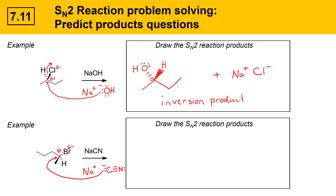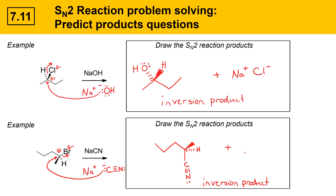In the next step, the leaving group leaves, and this is inversion of configuration. The nucleophile comes in from the back face — as it does, the methyl group gets bent in one direction and the hydrogen in the other. The nucleophile is delivered from that face while these groups bend out of the way. This is an inversion of configuration type product, and the co-product is sodium bromide.